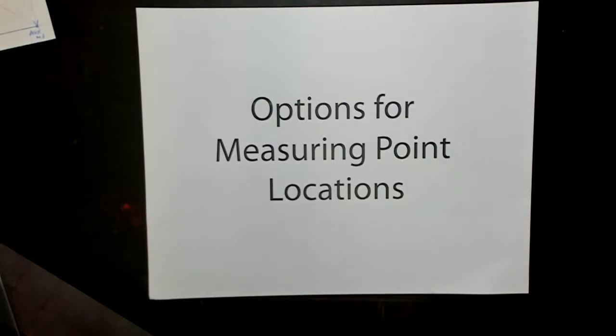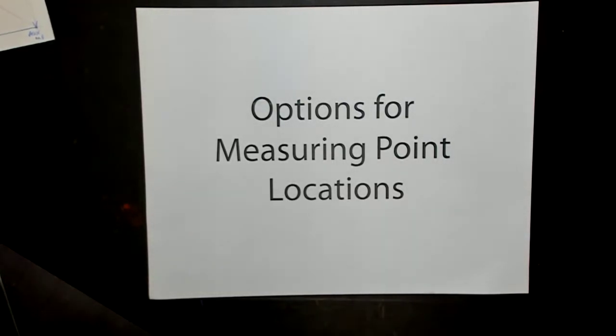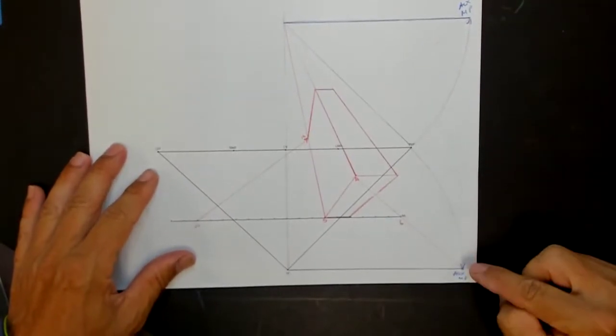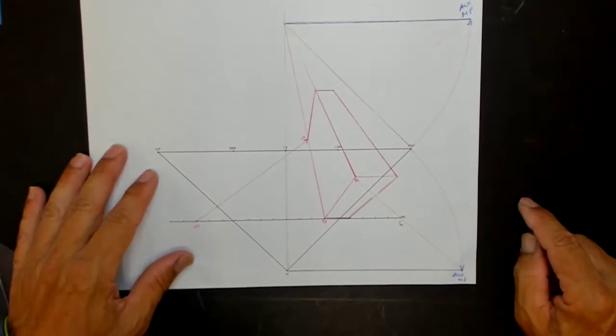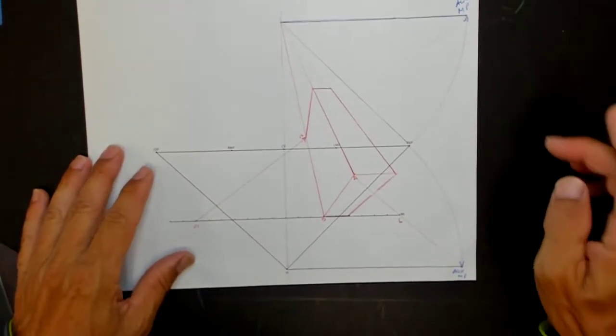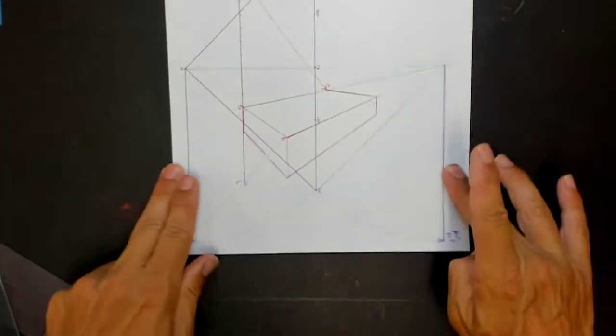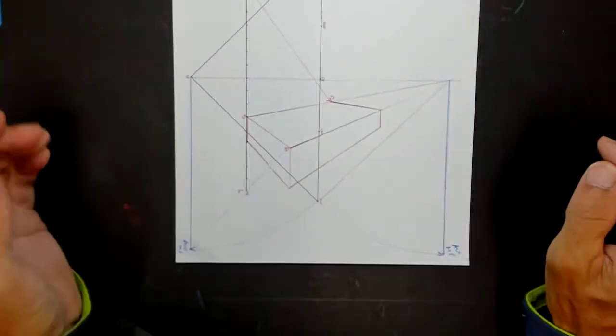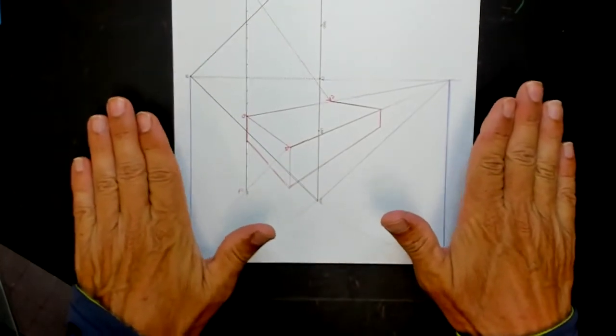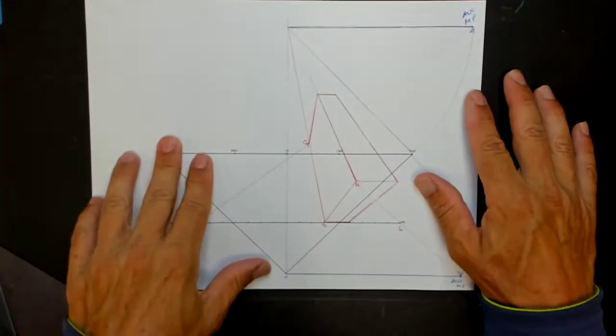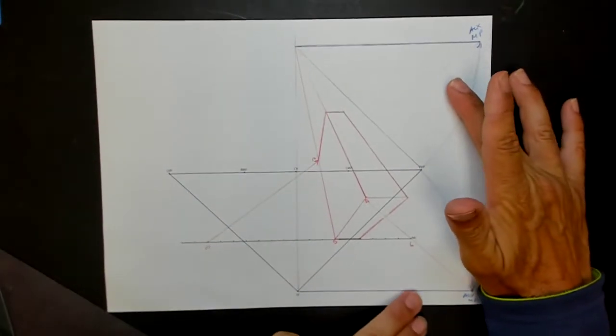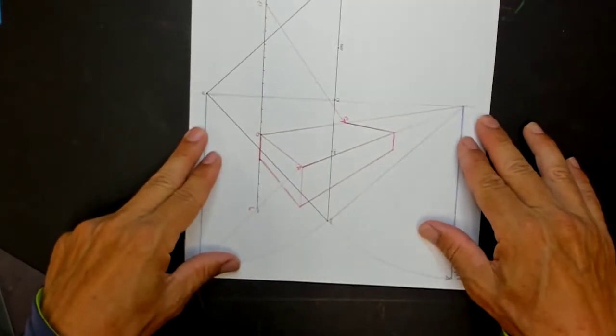The last video we left off here with our measuring points in these locations to measure inclines. We turned this sideways and this is just like a two-point perspective diagram. So inclines in one-point perspective are simply two-point perspective diagram turned sideways.